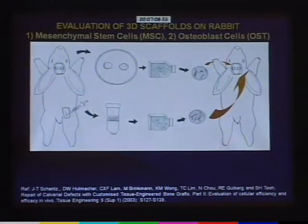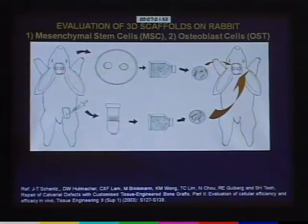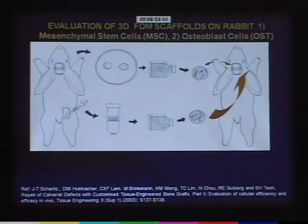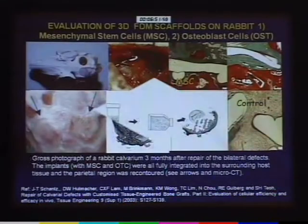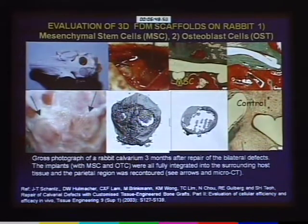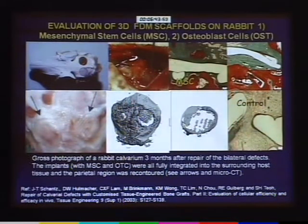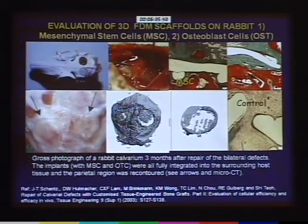In all the medical devices, we go through a series of intensive animal studies. One of the earlier animal studies is on the influence of stem cells and adult cells on a rabbit model — specifically the Calvary rabbit model. We were extremely happy to realize that the integration of the tissue with the scaffold is exceptional, as can be seen by the histological sections and also by the micro-CT.